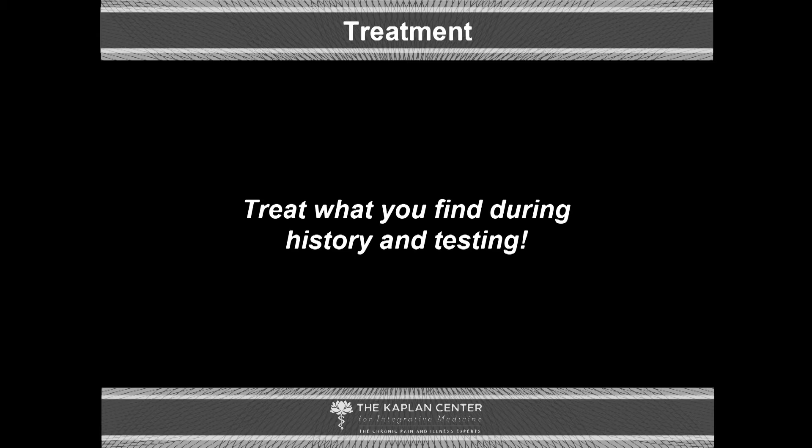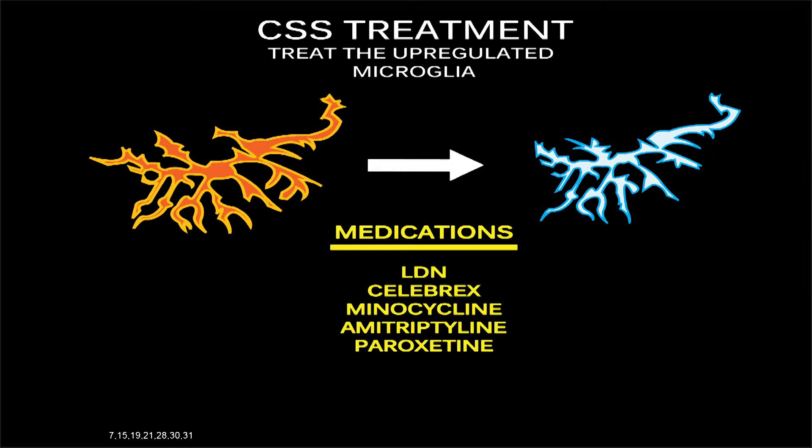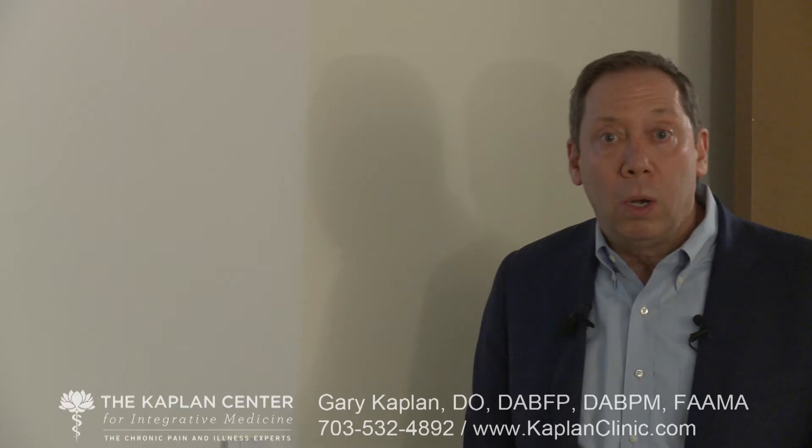Phase two: treat the issue — treat what you find during your history and testing. This is a whole other lecture unto itself, and we're not going into the details here. But now you know where to look, what questions to ask, and how to find it. The issue we're left with is putting out the fire — once the microglia are upregulated, what do we do to shut the process down?